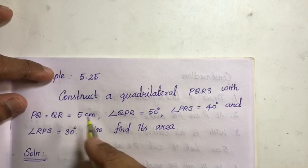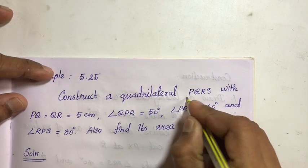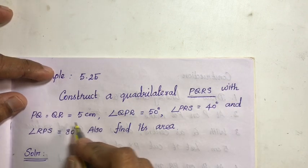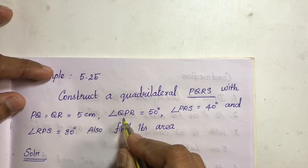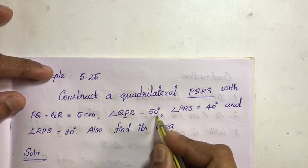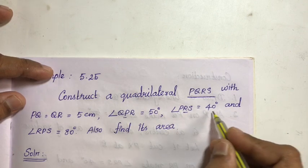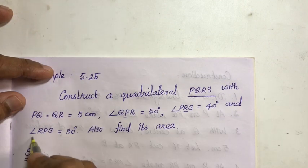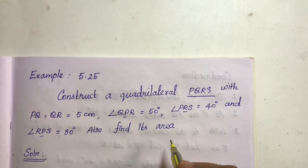The question is: construct a quadrilateral PQRS with PQ equal to QR equal to 5 cm, angle QPR equal to 50 degrees, angle PRS equal to 40 degrees, and angle RPS equal to 80 degrees. Also find its area.